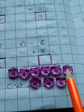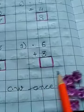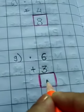1, 2, 3, 4, 5, 6, 7, 8, 9. So 6 plus 3 is 9. So write 9 here.